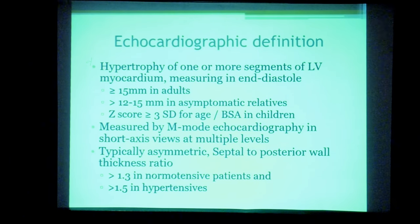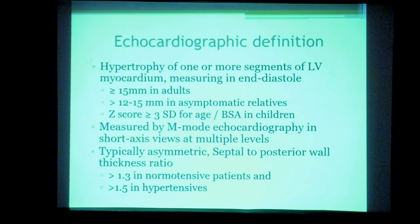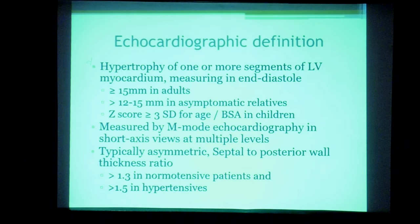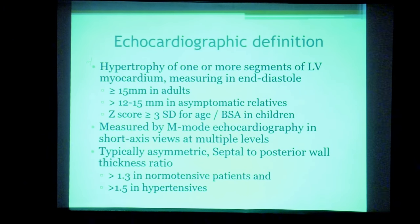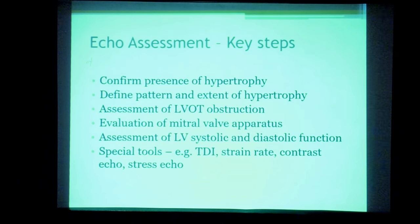The hypertrophy in HCM is typically asymmetrical. Asymmetrical hypertrophy is defined by a septal-to-posterior wall thickness ratio of more than 1.3 in normotensive patients and more than 1.5 in hypertensive patients. Keeping these basic measurement definitions in mind will make the subsequent slides easier to follow.